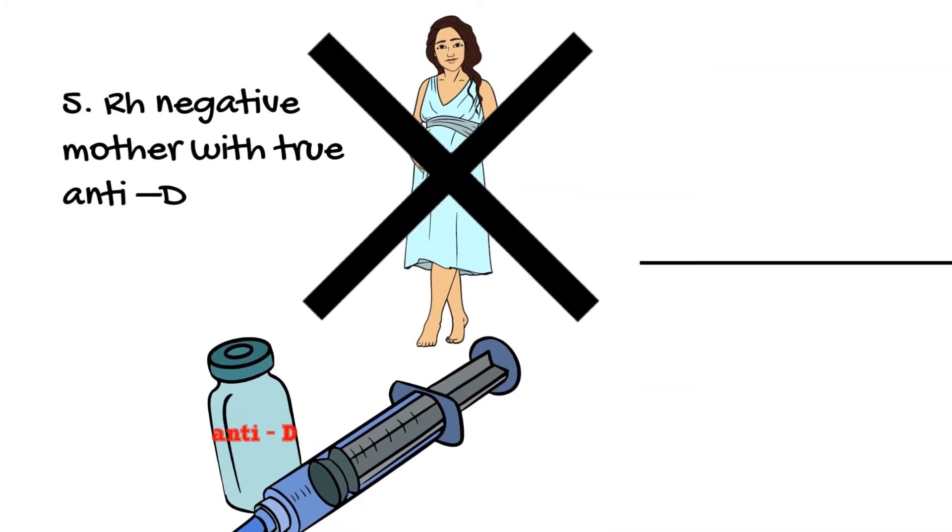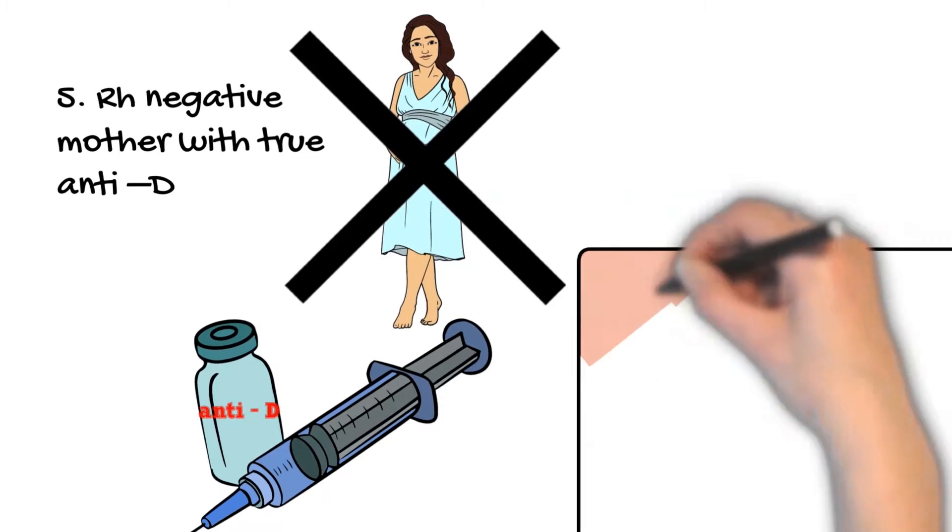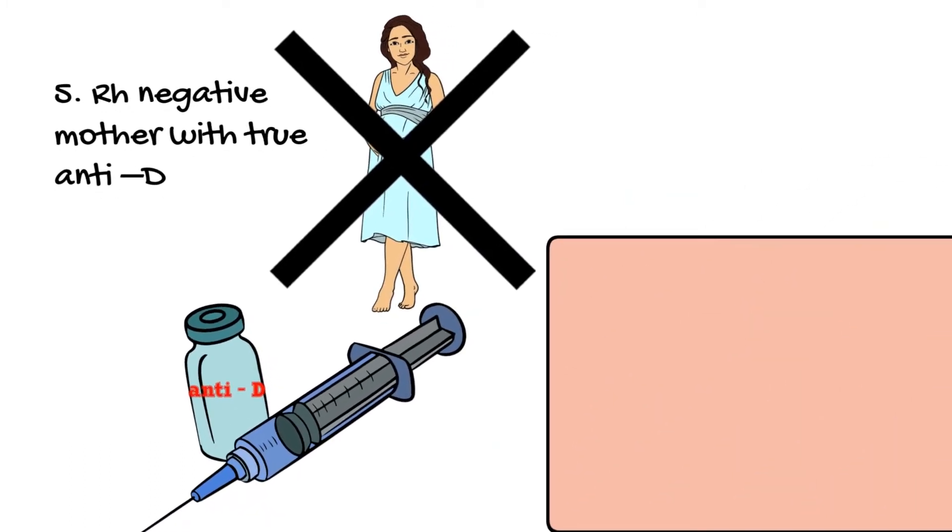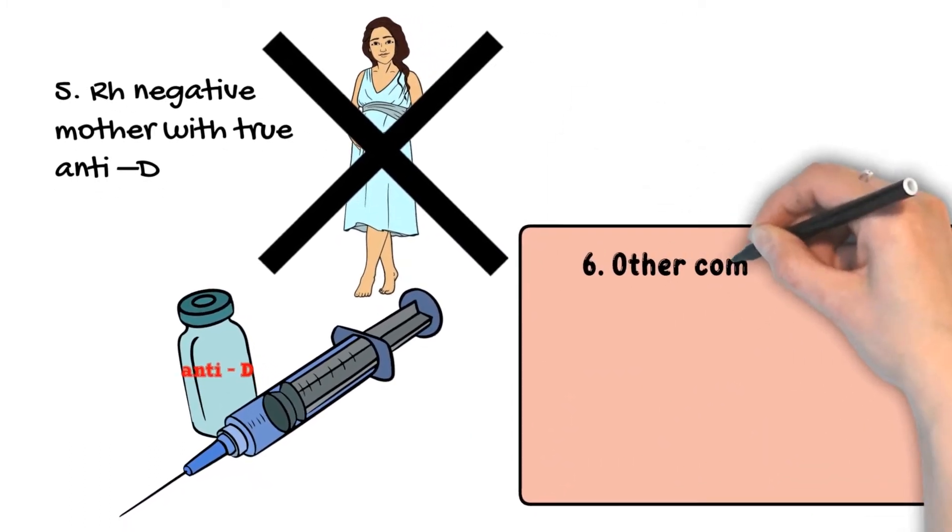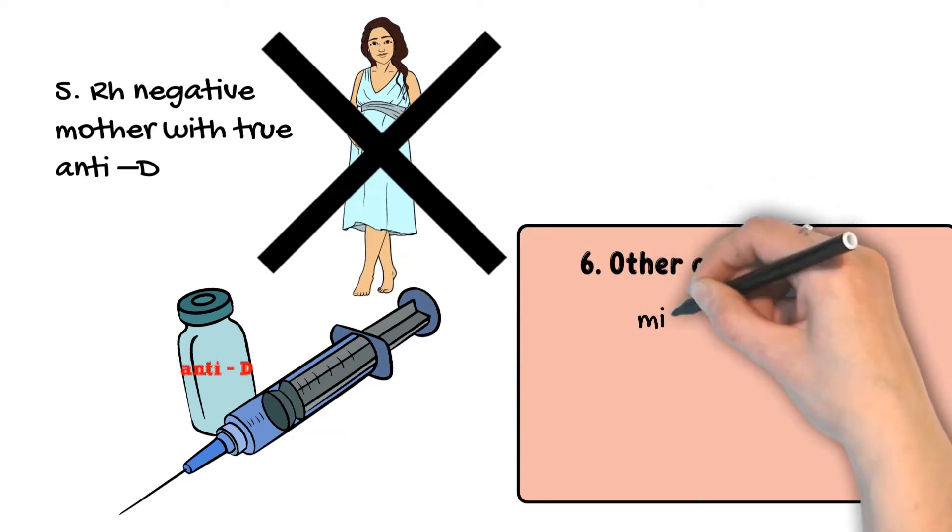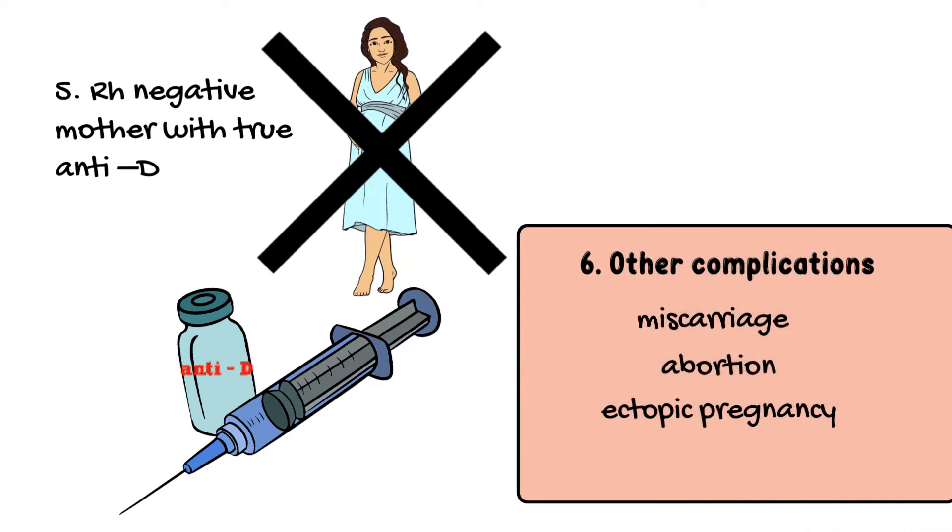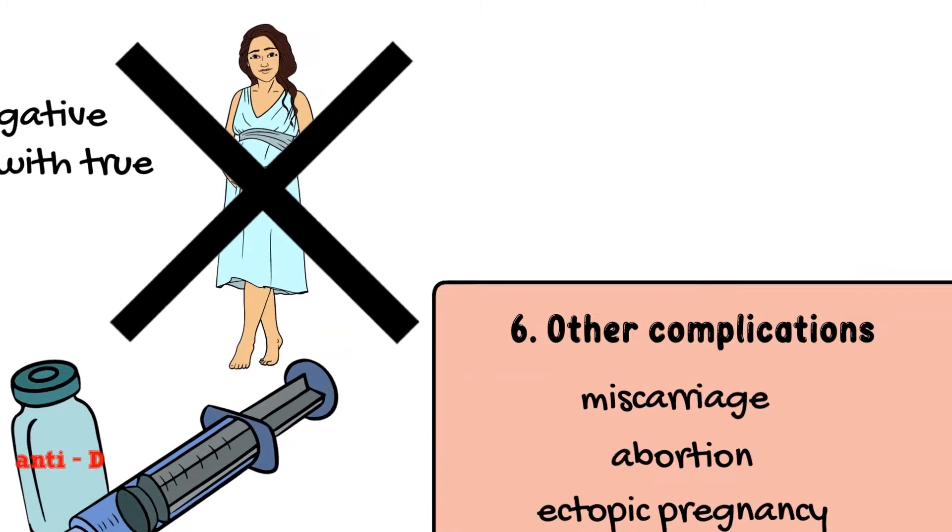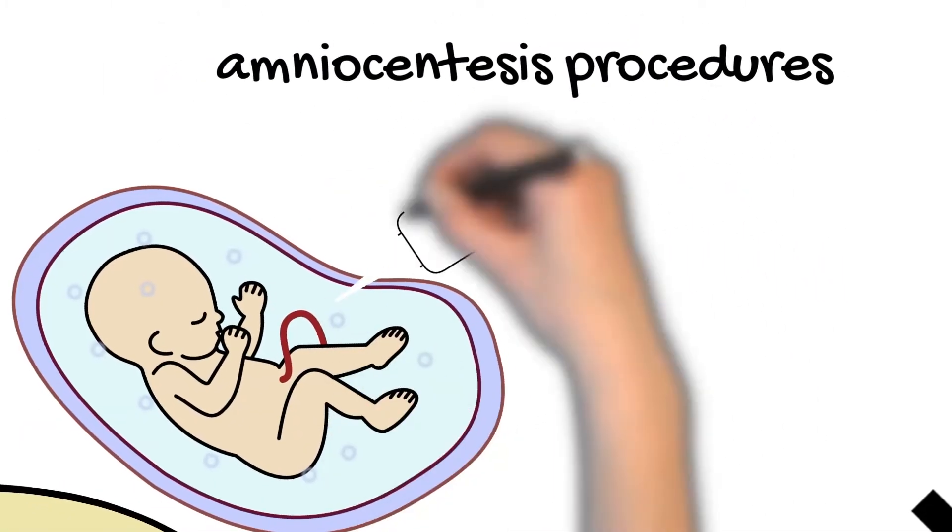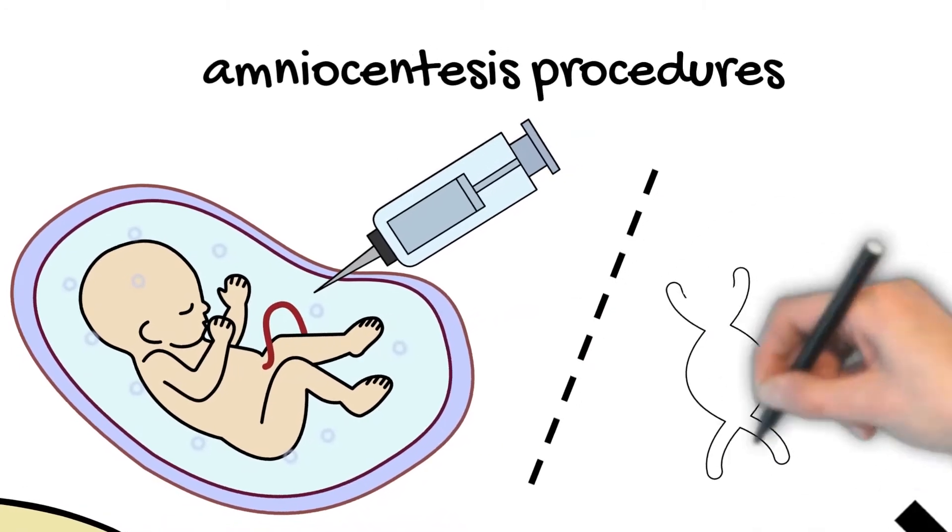There are other pregnancy complications that RHIG would be recommended for. Some examples are miscarriage, abortion, ectopic pregnancy. RHIG is also given to expectant mothers who undergo invasive procedures during pregnancy, such as amniocentesis. Amniocentesis is a procedure in which a sample of amniotic fluid from the uterus is drawn for testing or treatment.